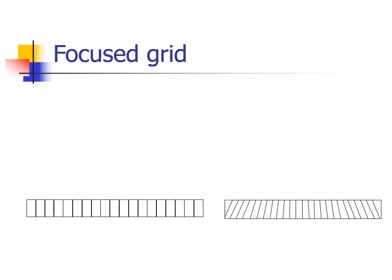On this slide, we have two grids. On the left is a familiar parallel grid, and on the right is what we call a focused grid. What makes a focused grid unique is as you move from the center of the grid, the lead strips are progressively angled to the center of the grid.